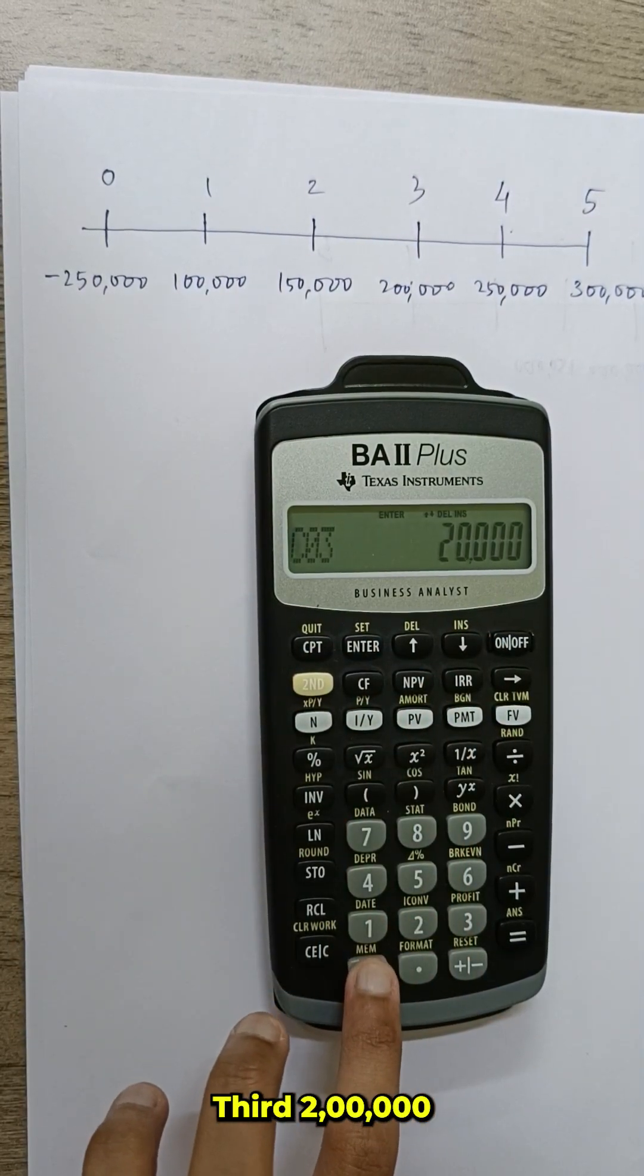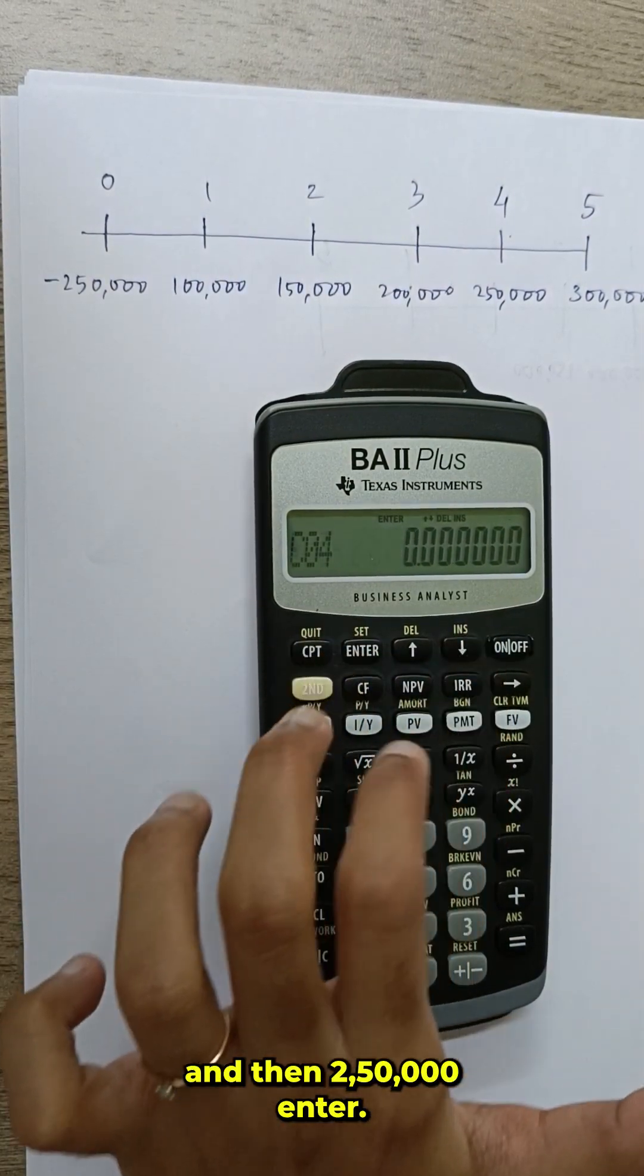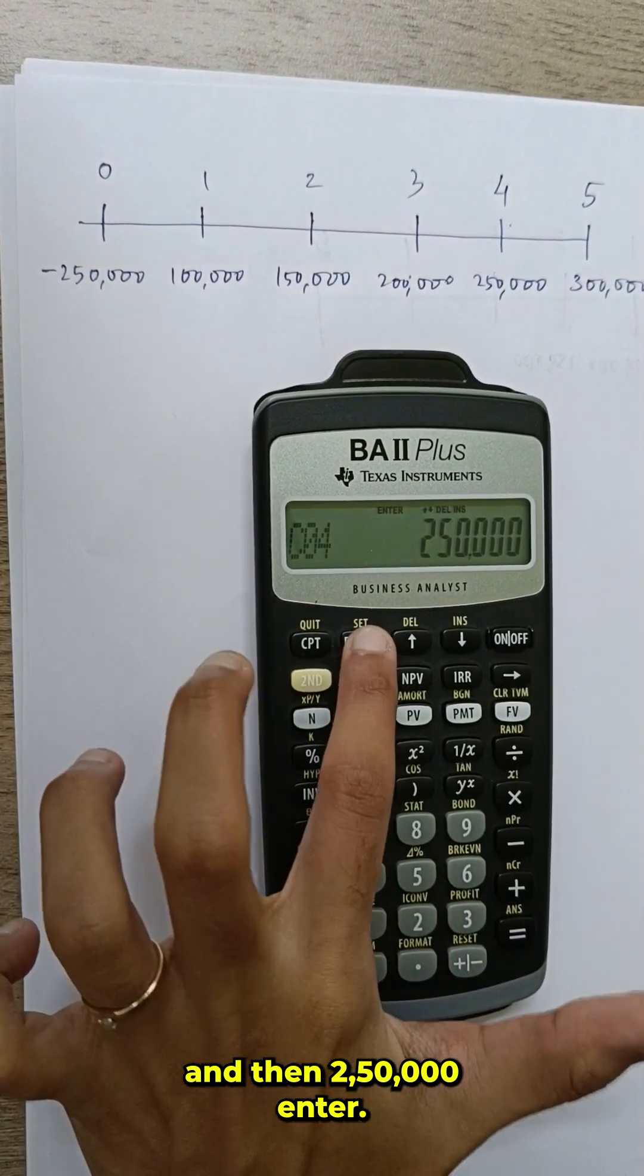Third 2 lakh, enter. Then 2 lakh 50,000, enter.